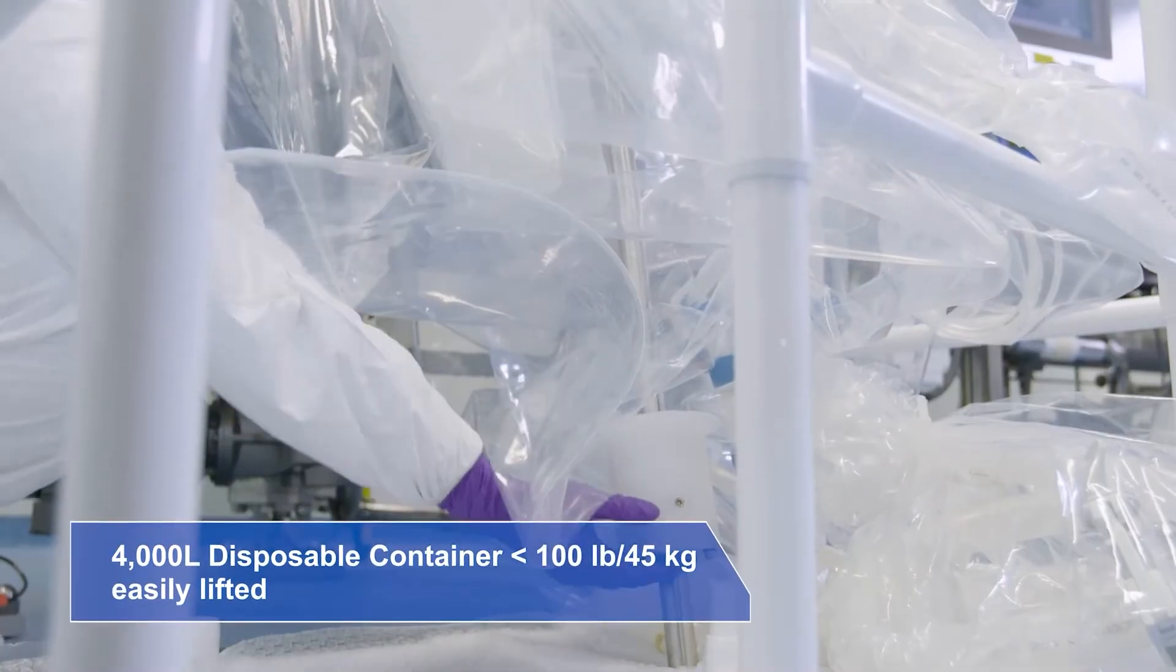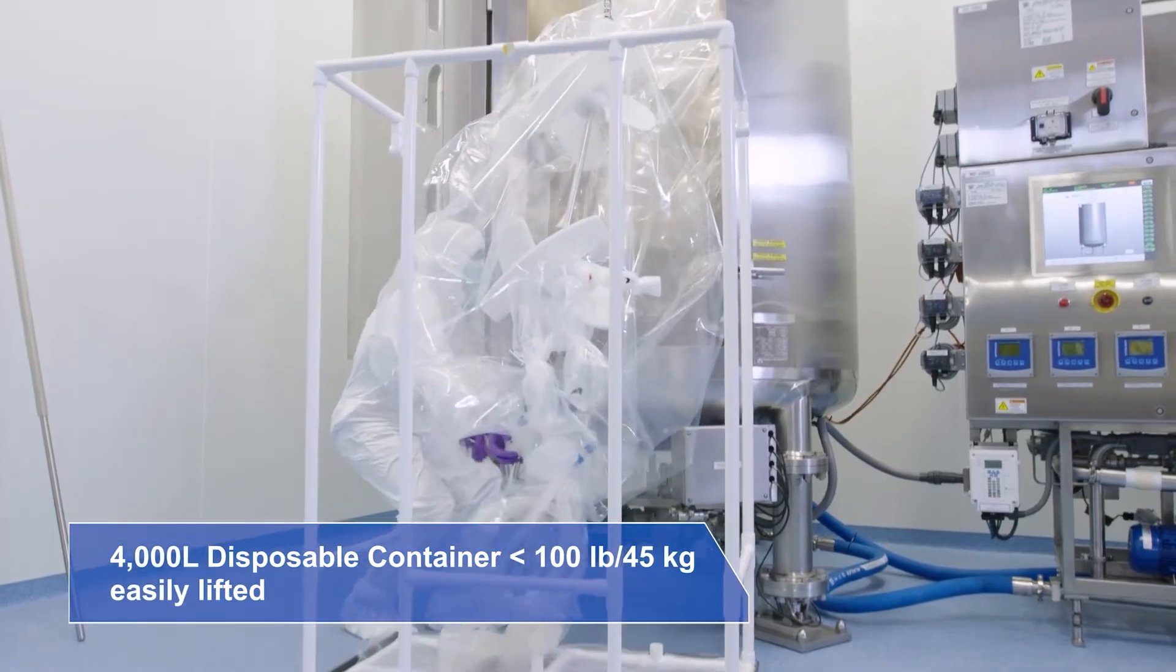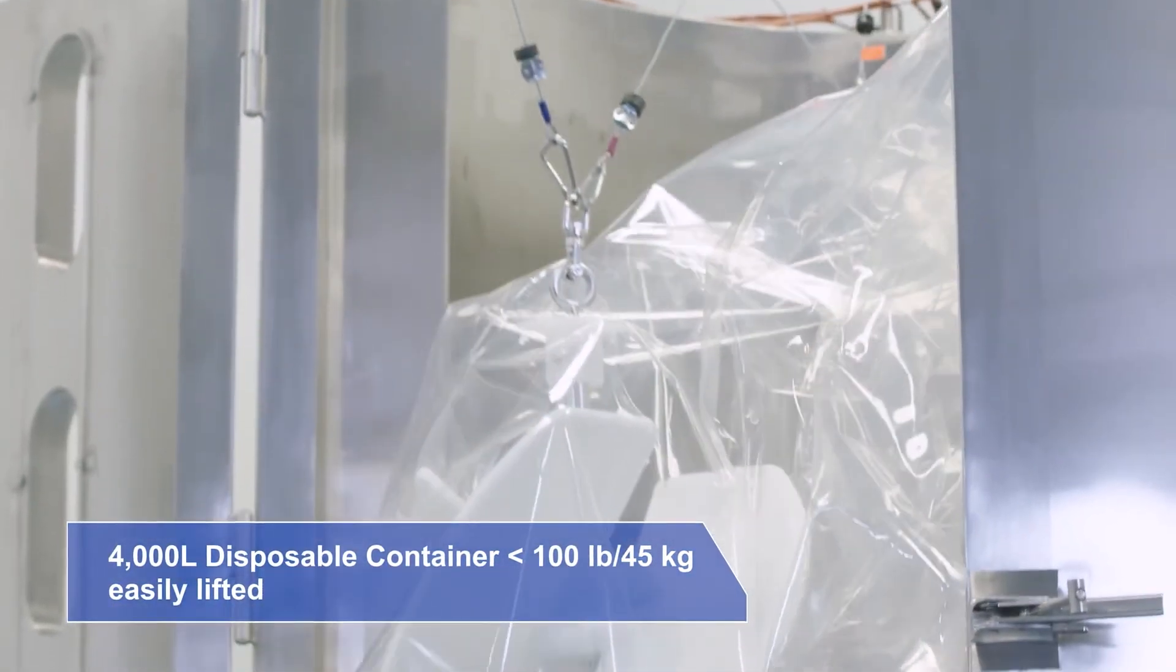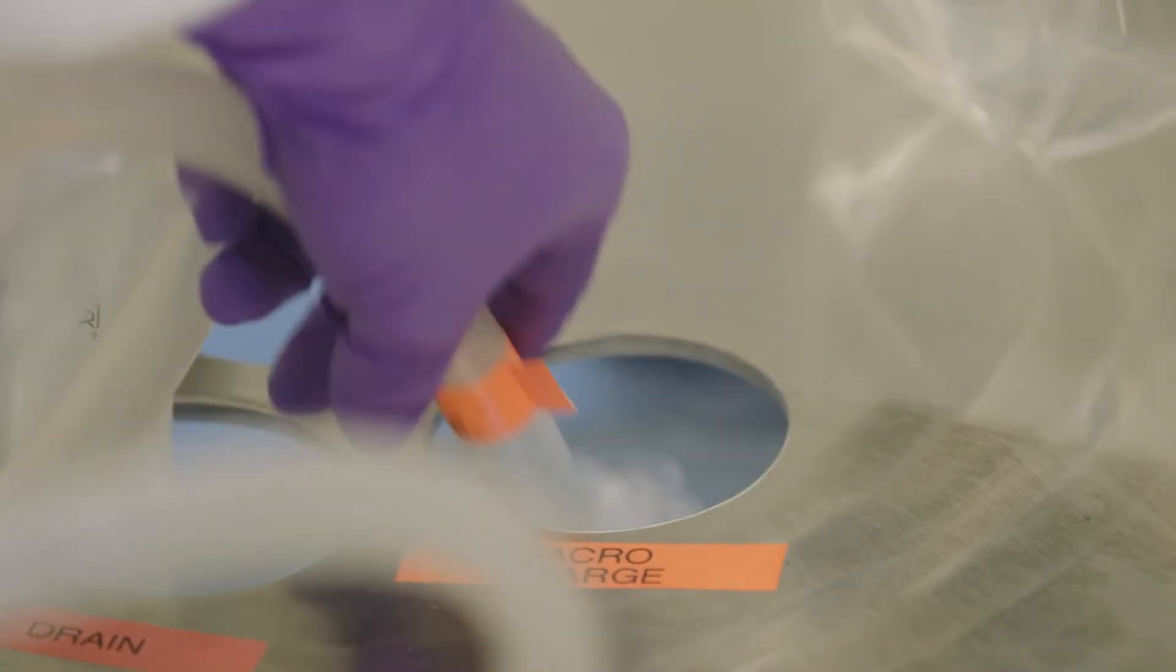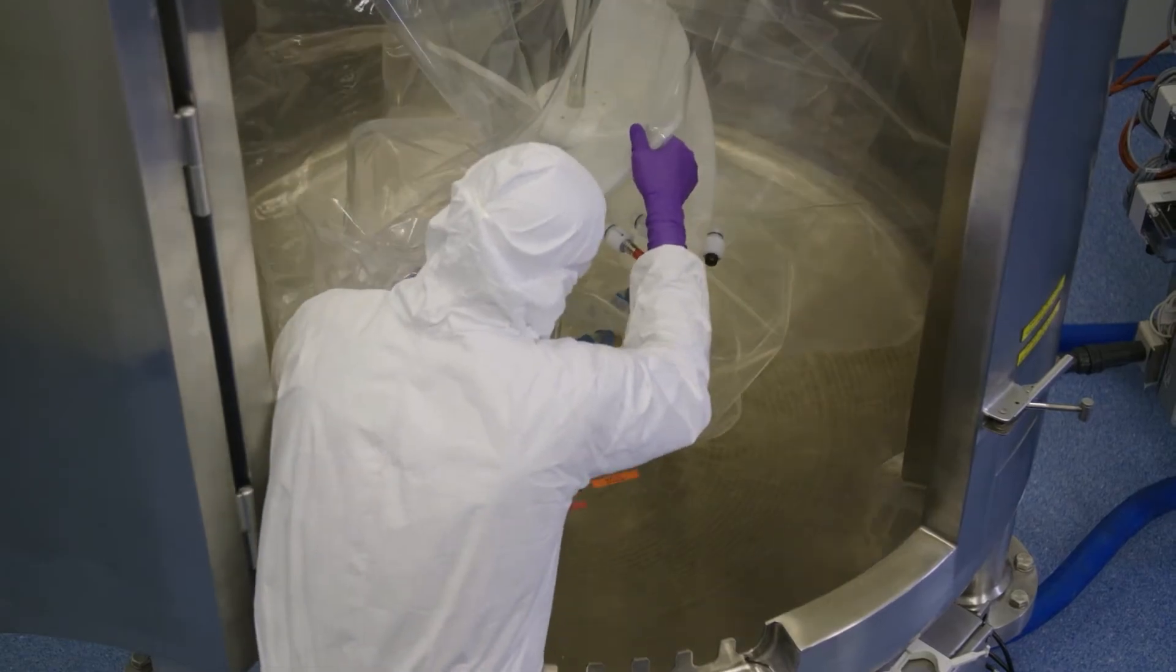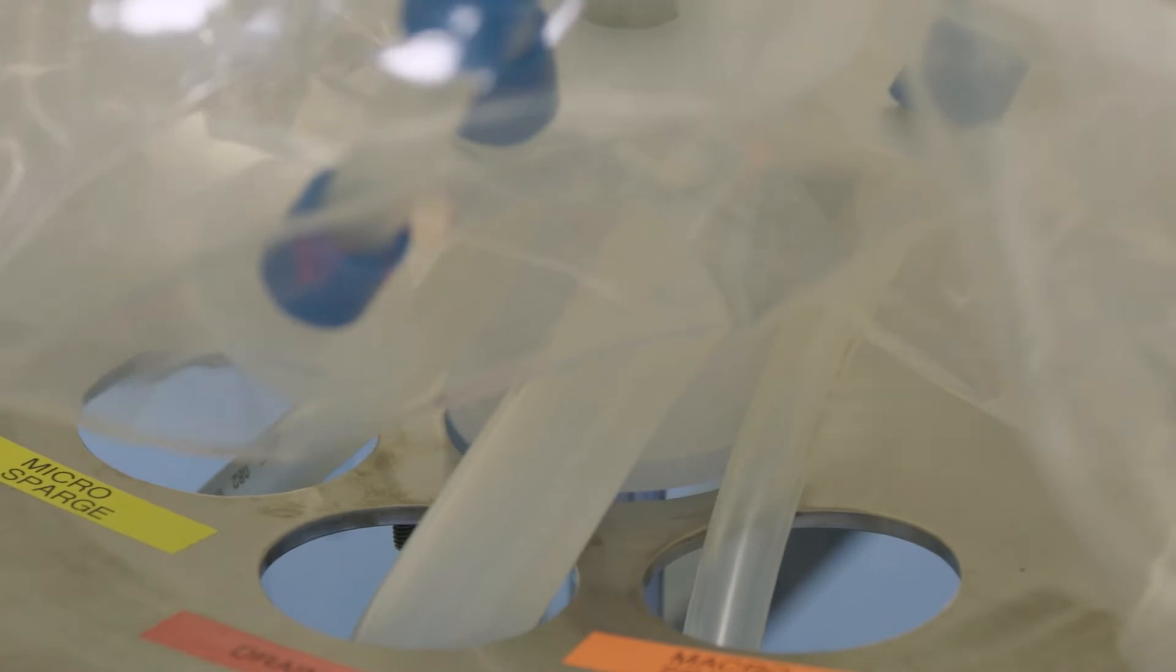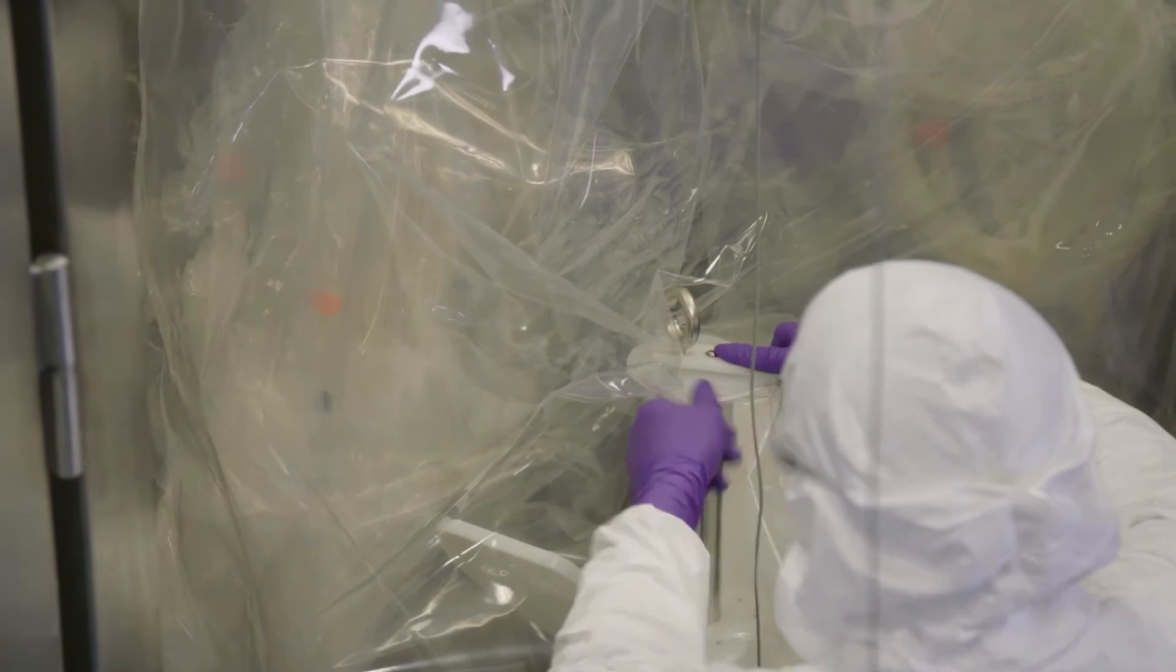Designed to easily lift the disposable container into the bioreactor holder, position tube sets into the bottom of the bioreactor.